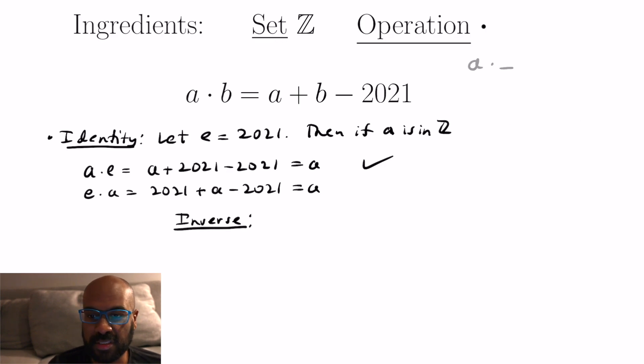Okay now let's look at inverses. If I want the inverse of a number a then I need the group operation with that inverse and a to be 2021. So that means a plus whatever that is we'll call it blank minus 2021 has to equal 2021. And if we rearrange that tells us that blank should be 4042 minus a. So we have a candidate for what our inverse should be and we should actually check.